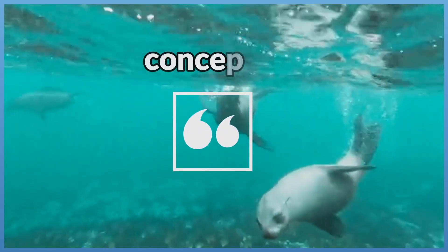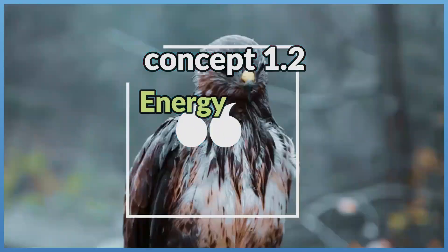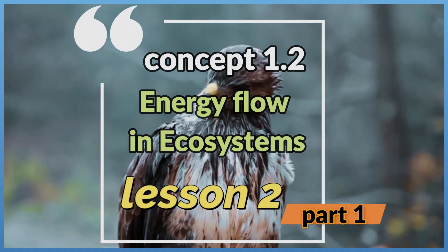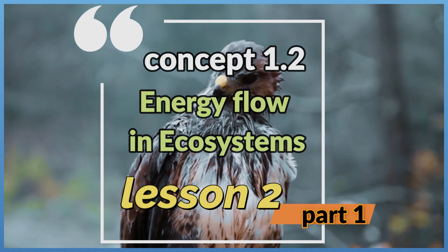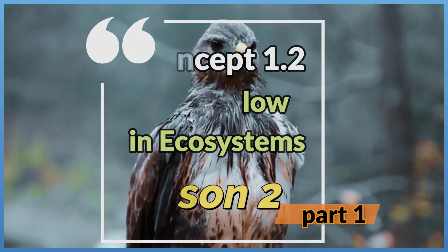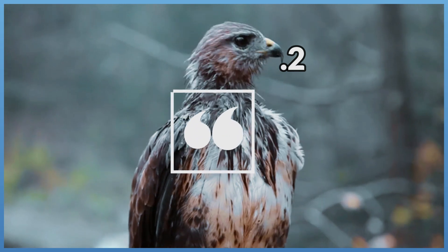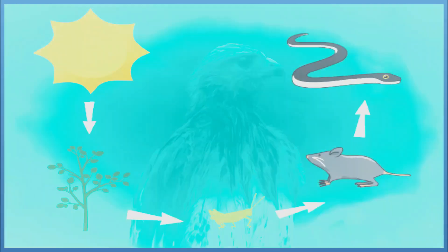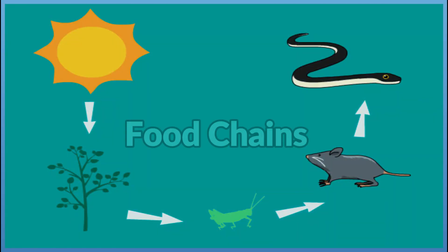Concept 1.2: Energy flow in ecosystems. Lesson 2, Part 1 — Food Chains.